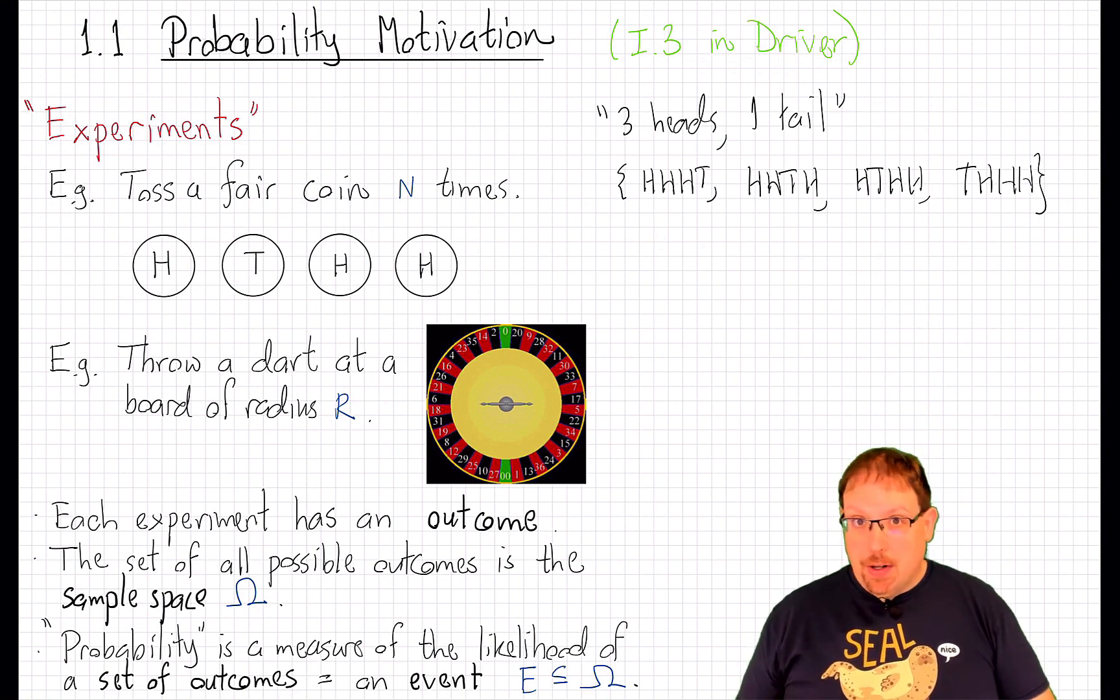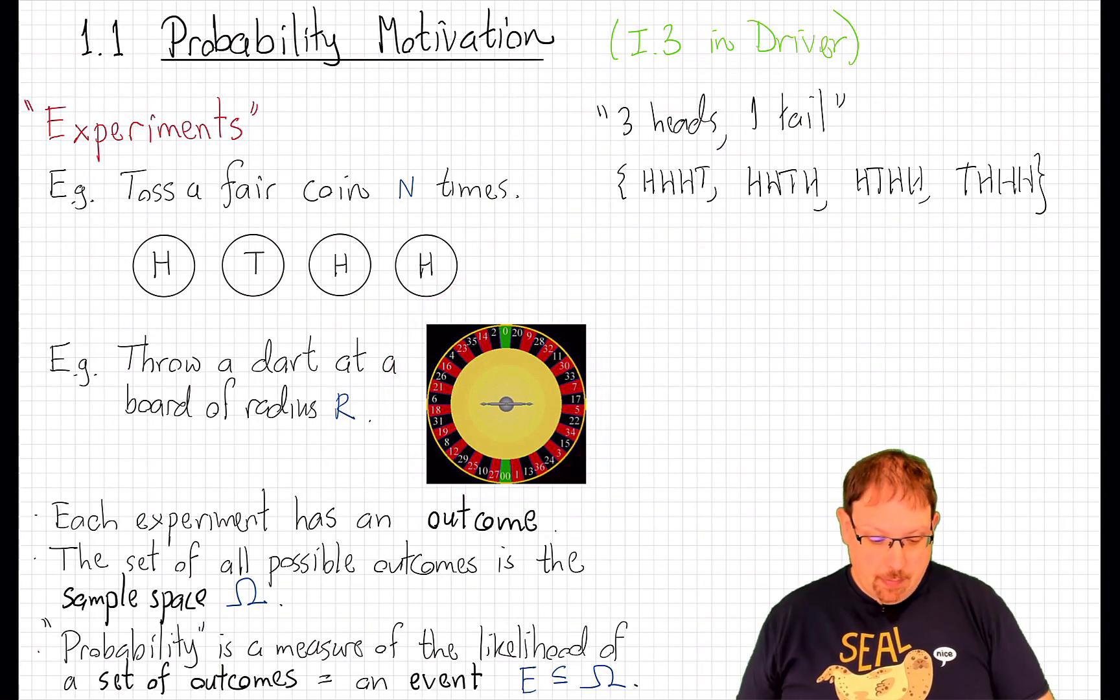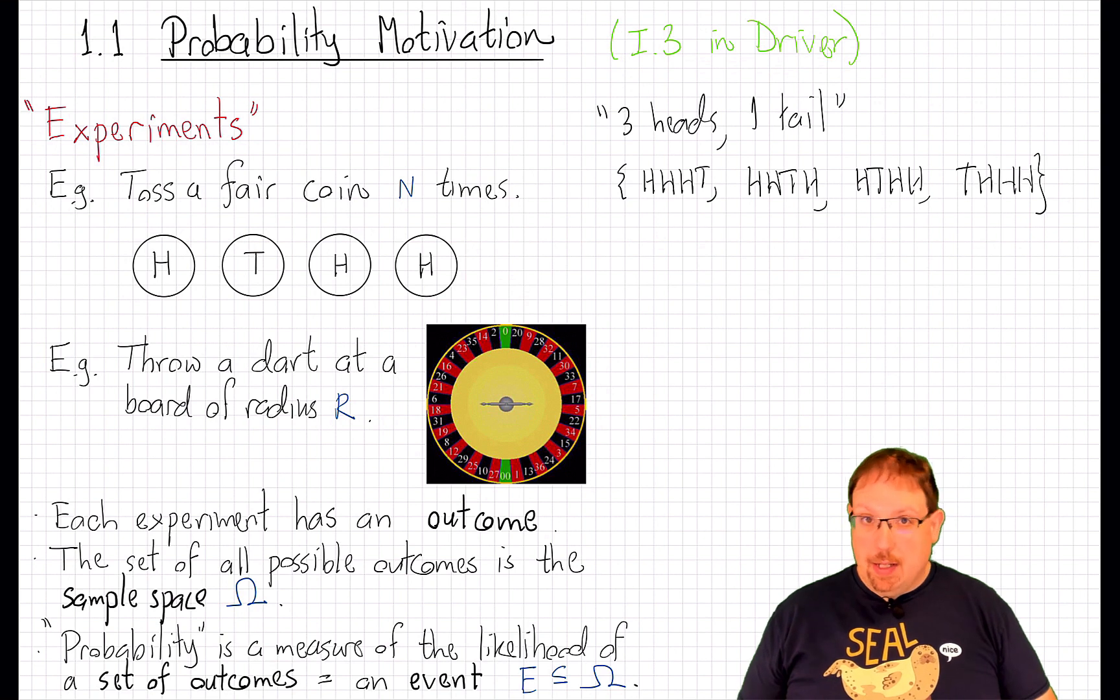But there are other experiments that can be conducted where the probabilities can't be computed just by counting. Another one comes from gambling houses, and that is throwing darts at a dartboard. In this case, we might be interested in the probability of hitting a bullseye.